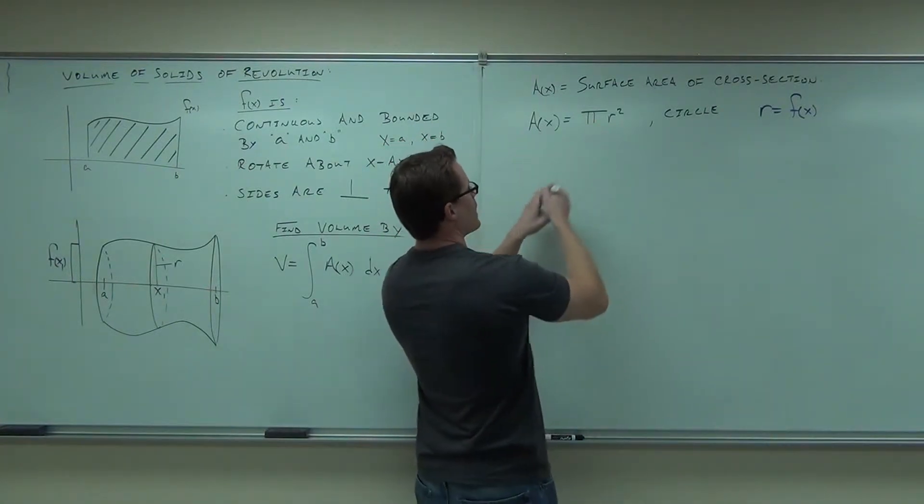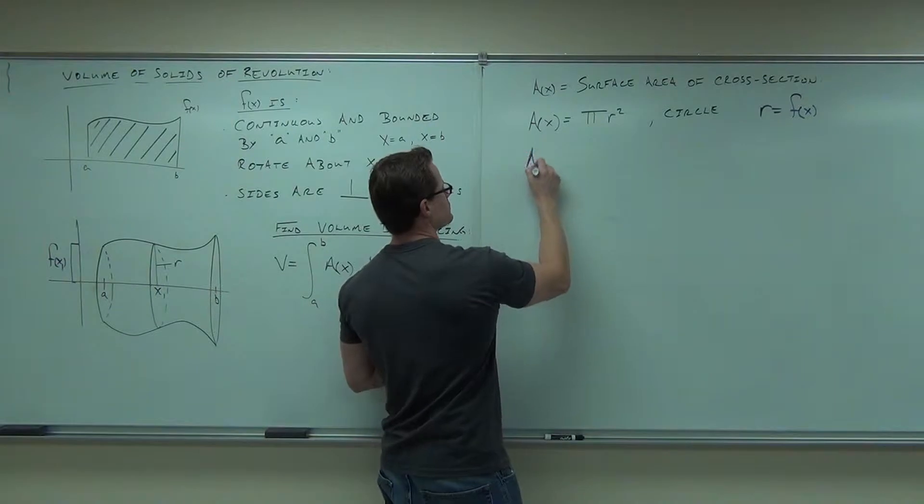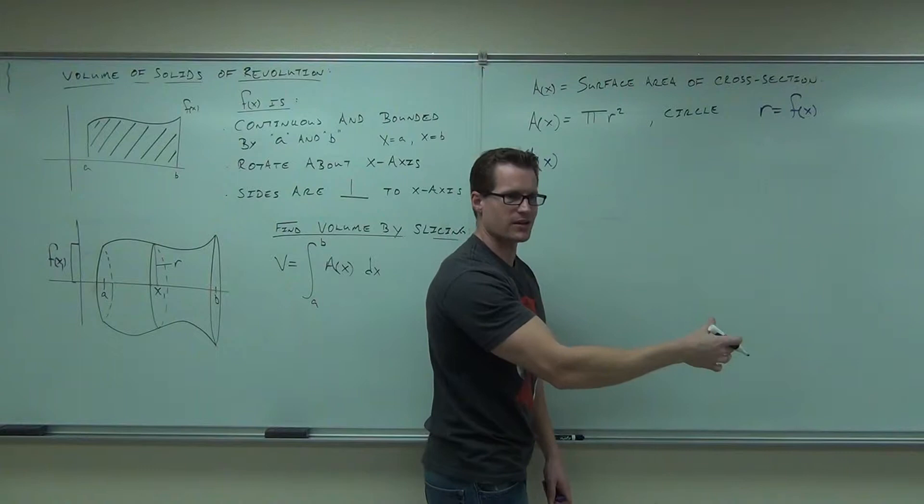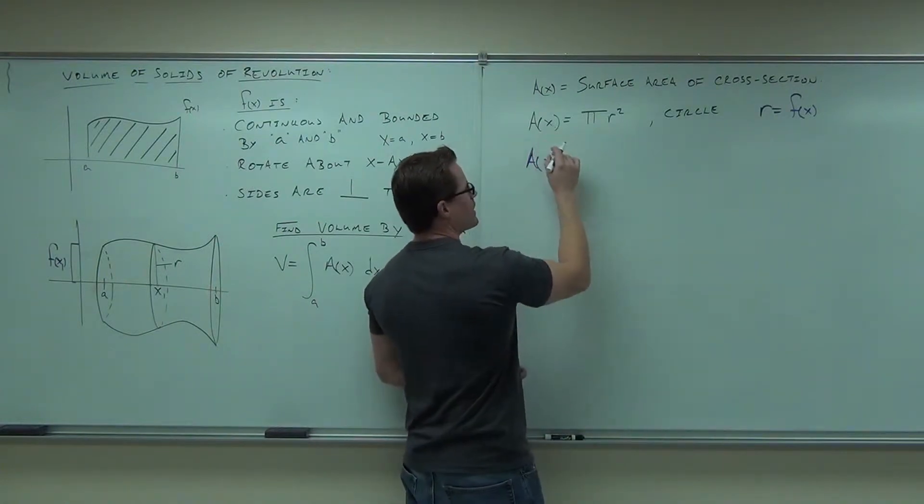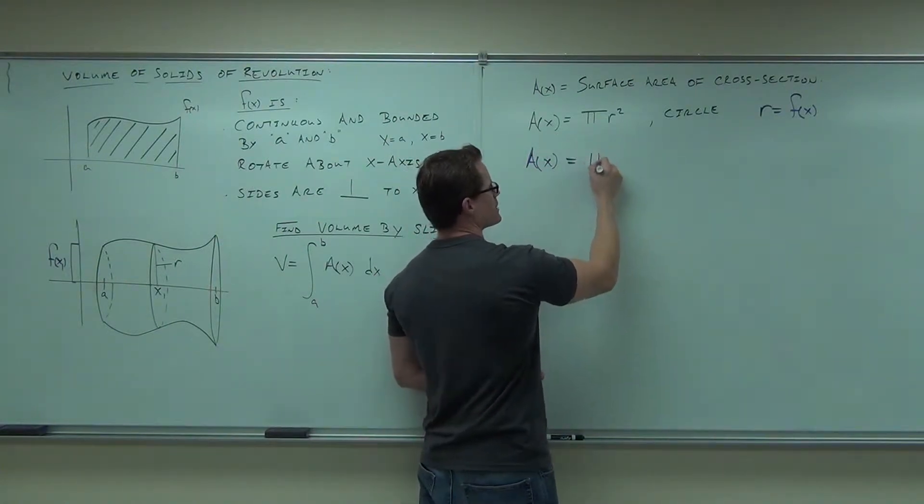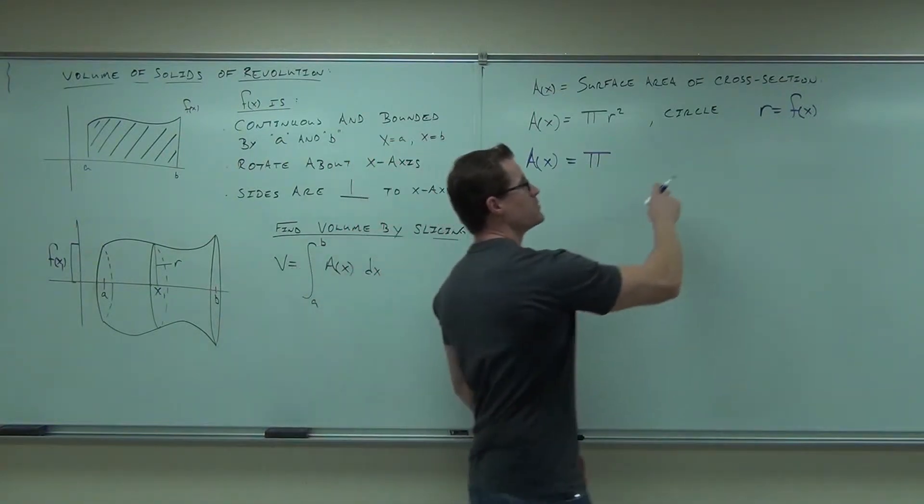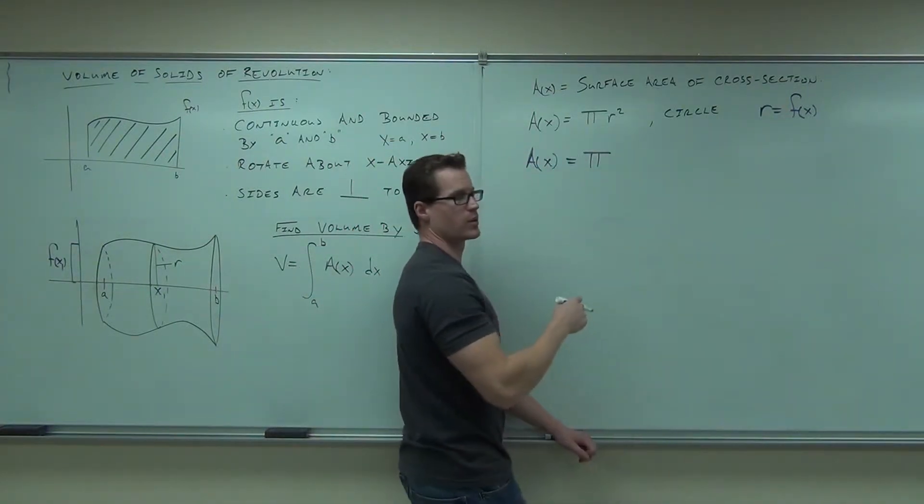If we have A sub x, which doesn't make sense right now because that's not in terms of x, is it? And we needed it in terms of x. So A of x equals π r², A of x equals π, not r, because r is not in terms of x right now. We need to make it in terms of x. What's going to go in there?